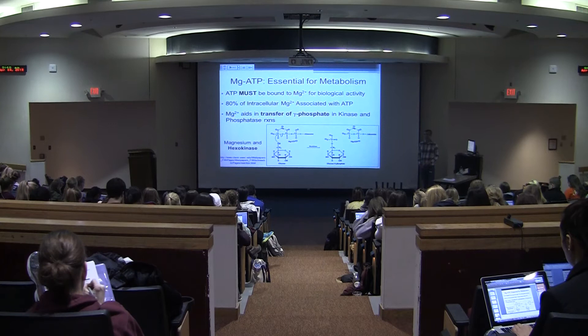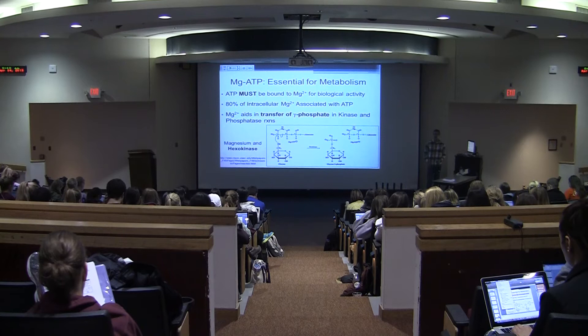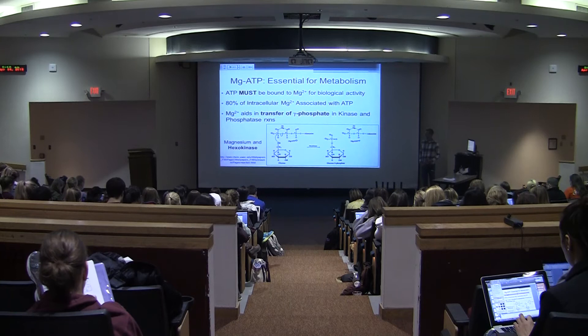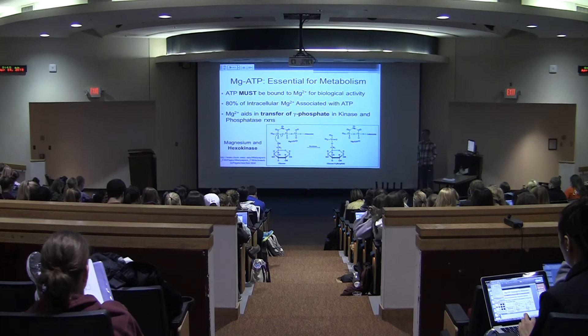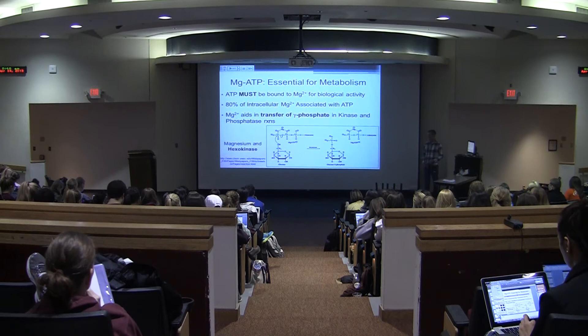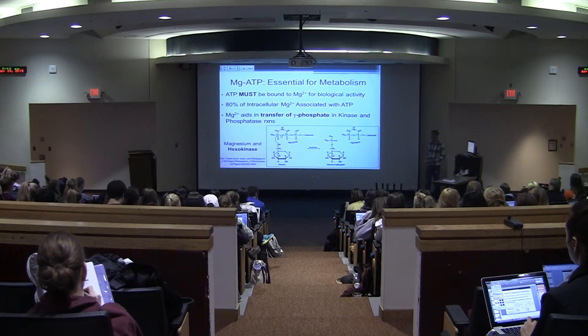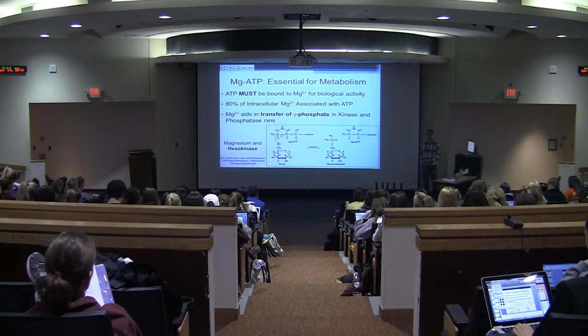This role is so important that about 80% of the intracellular magnesium is associated with ATP at any given time. Magnesium is essential for ATP's biological activity because it aids in the transfer of phosphate — the phosphate transfer reaction — in kinases and phosphatases. Here's an example: hexokinase, which is the first step of glycolysis. It involves the transfer of the phosphate from ATP to glucose to form glucose-6-phosphate and ADP.